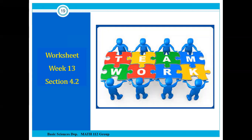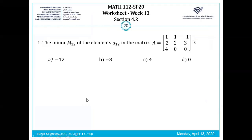Okay, so worksheet section 4.2 about the determinant of a square matrix. First question: find the minor M12 associated to this matrix.